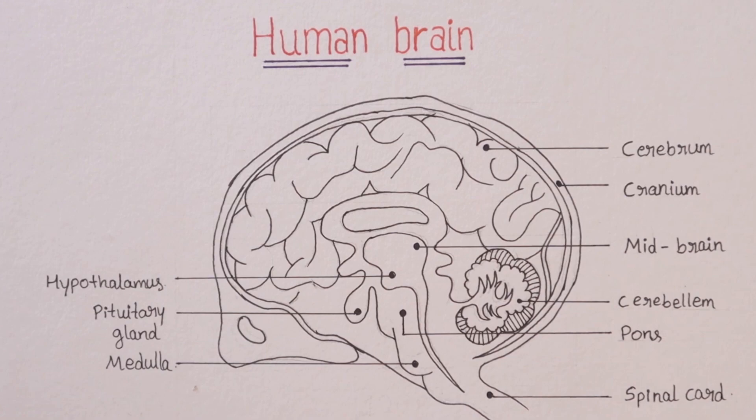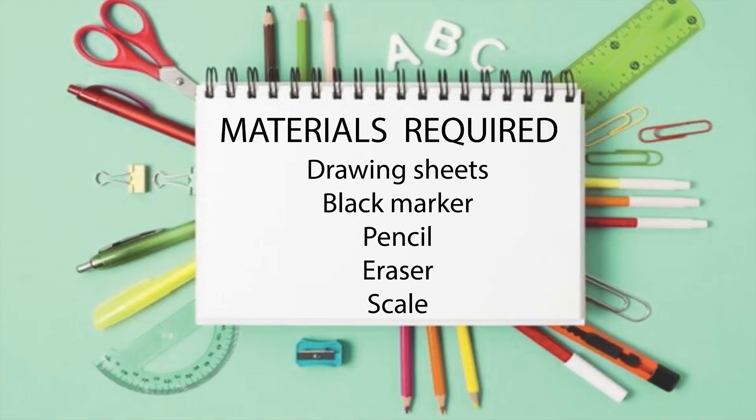So dear students, now let us learn how to draw the human brain in very easy steps. Materials required: drawing sheets, black marker, pencil, eraser, and scale.